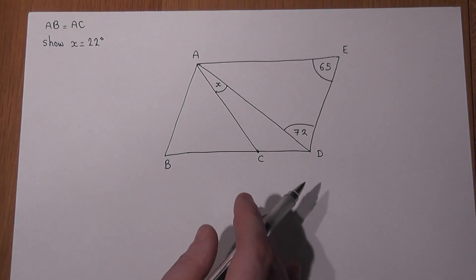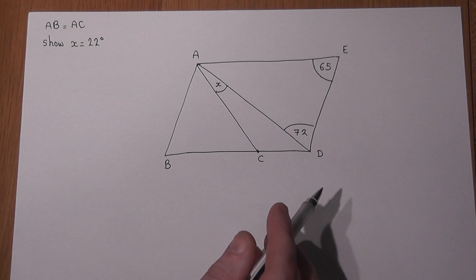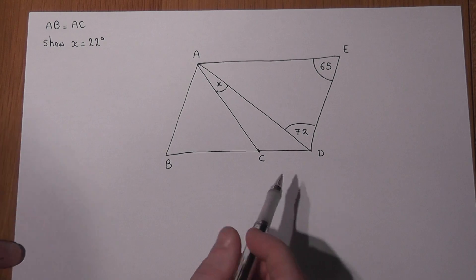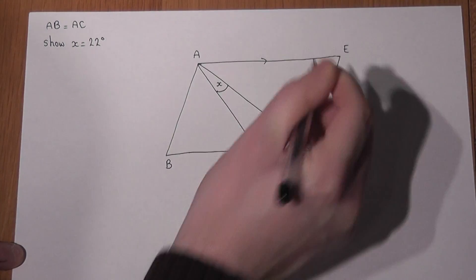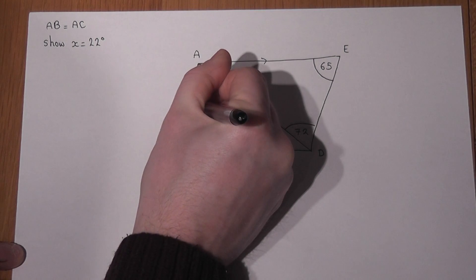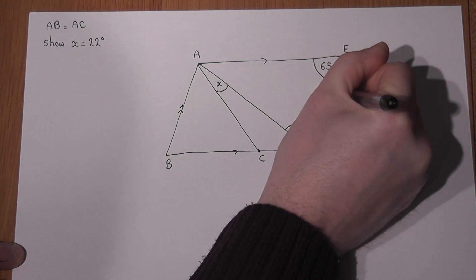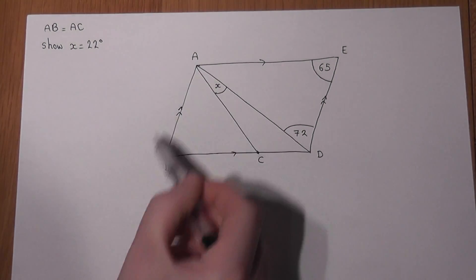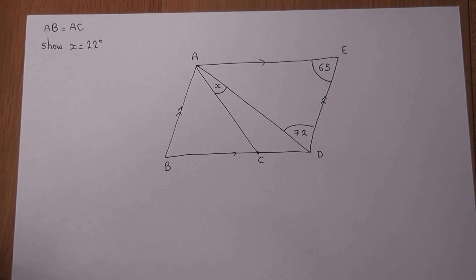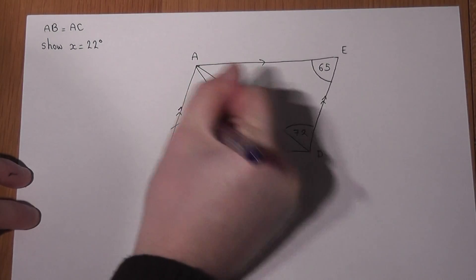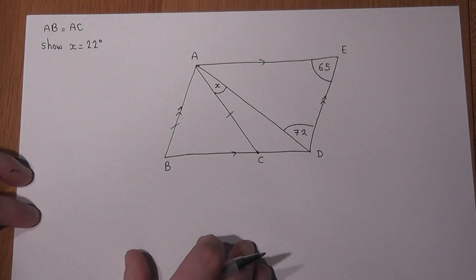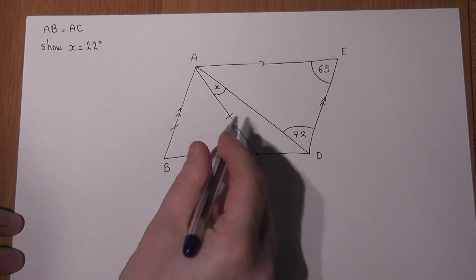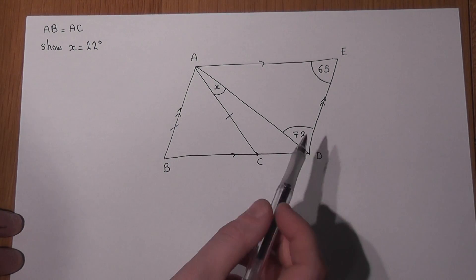In doing so, we'll also revise some key angle rules. This is a parallelogram, so we have two sets of parallel sides, and we're also told that length AB is the same as length AC. So I'm going to mark on here two dashes to indicate the fact that these two are the same length.